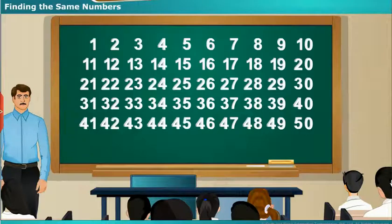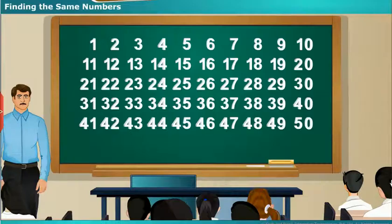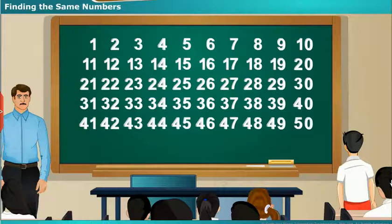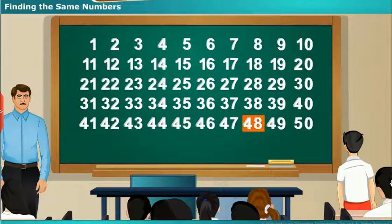Tell us the numbers starting from 3 by giving 3 spaces for each number. 3, 6, 9, 12, 15, 18, 21, 24, 27, 30, 33, 36, 39, 42, 45, 48.